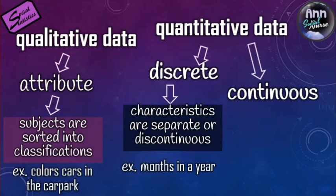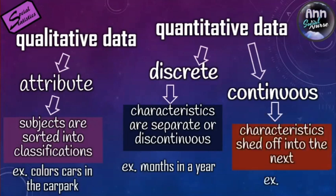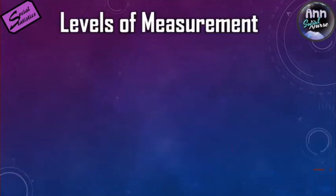Continuous data involves characteristics that shade off into the next, like age. As I am speaking to you right now, age — my age, your age — is advancing by the second. Tomorrow someone may turn a year older. Each of us is a day older. That is what is meant by continuous: it goes on by the second and does not stay fixed, unlike months in a year, which are clearly just 12.